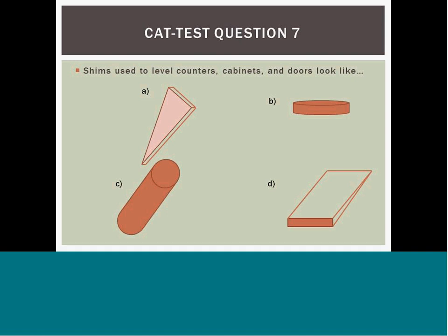Question 7 concerns how to level cabinets and doors. Answer D is the best choice: back trim allows for sliding underneath projects, whereas options A, B, and C are very difficult to get underneath projects.